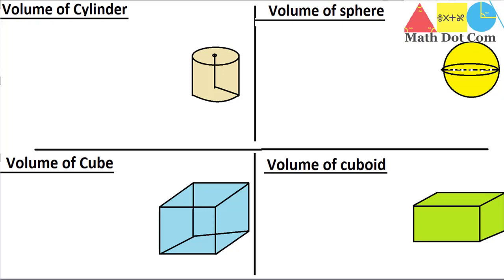Keep in mind that you always find the volume of three-dimensional objects. All four of these are three-dimensional objects. You cannot find the volume of a two-dimensional object — a two-dimensional object doesn't have volume — because volume represents how much material an object can carry, and material can only be carried by a three-dimensional object. In simple words, volume represents the amount of space in a 3D object.